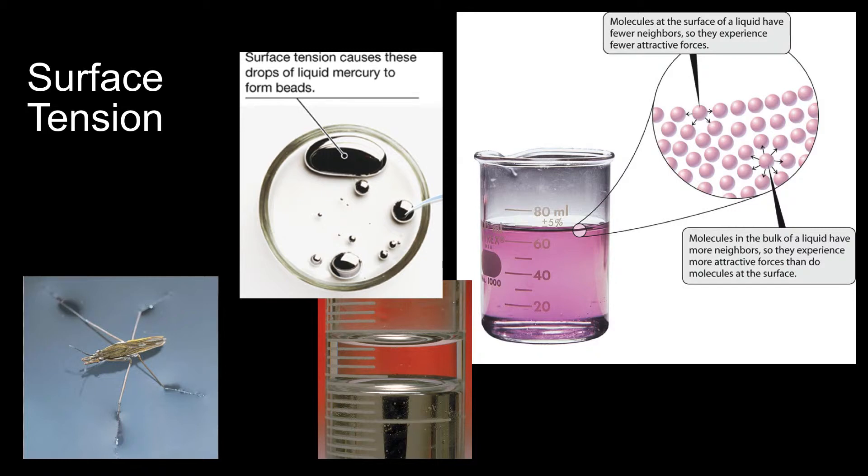Surface tension, like viscosity, is generally higher in liquids that have stronger intermolecular forces. Both properties are also temperature dependent because molecules at higher temperature have more kinetic energy to counteract the attractive forces holding them together.